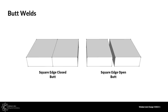Starting with butt welds and thin material, we normally start with a square edge butt — two pieces of material placed together with limited preparation, just a grinder or machined edge coming together. This is good for thin materials, but as thickness increases the ability to penetrate all the way through that metal will be reduced. As we go up in thickness we can start to spread the gap between the two plates and have an open butt, which allows the weld metal to start to fall through rather than be held up on the surface. Even then, these joint designs are only good to limited thicknesses depending on the welding process.